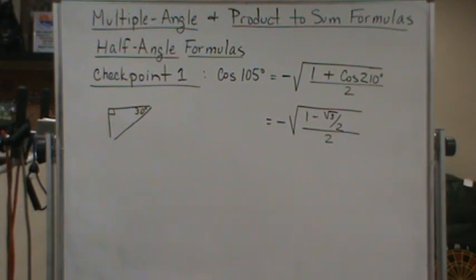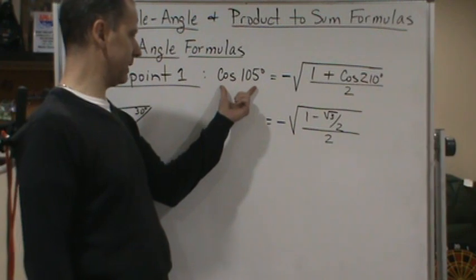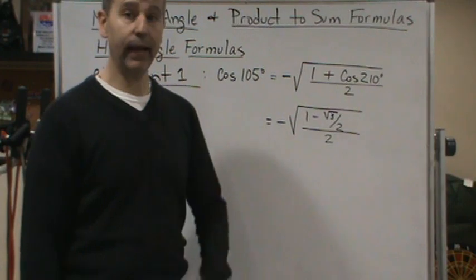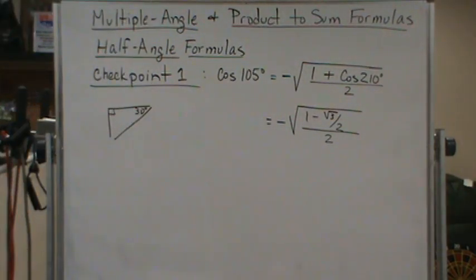You can verify that by sticking cosine 105 degrees in your calculator, then sticking this in your calculator and verifying you get the same answer. If you have any questions, let me know. If you got a different answer, double-check your work or let me know.